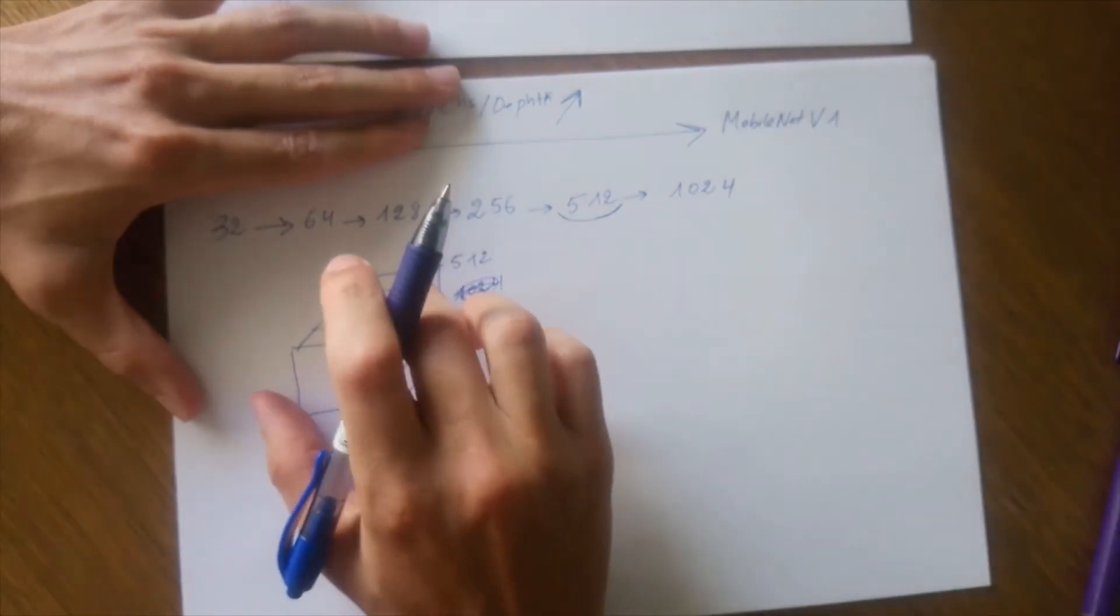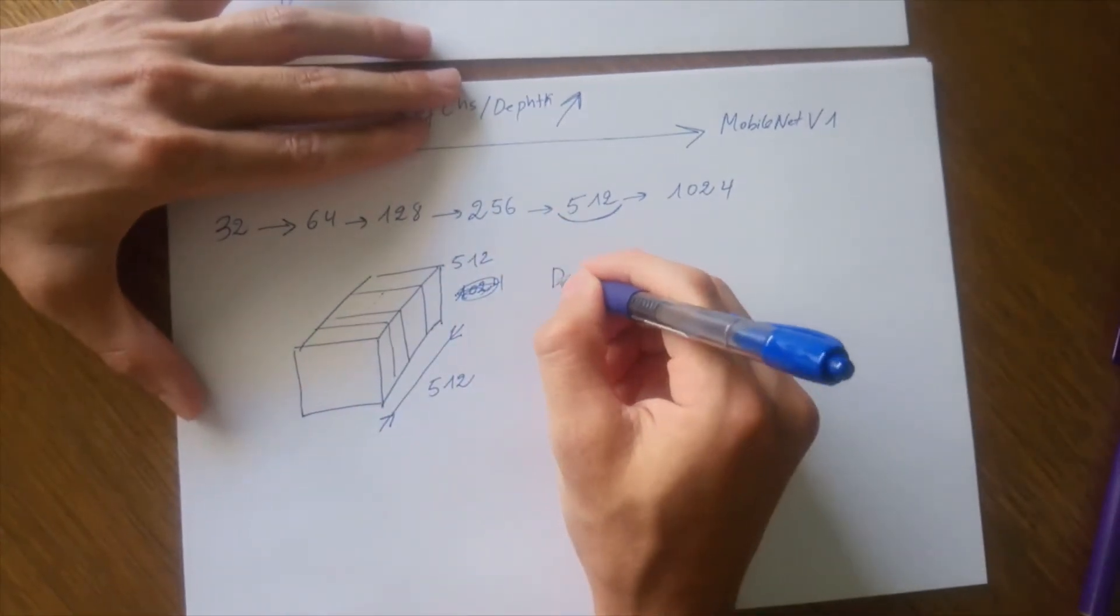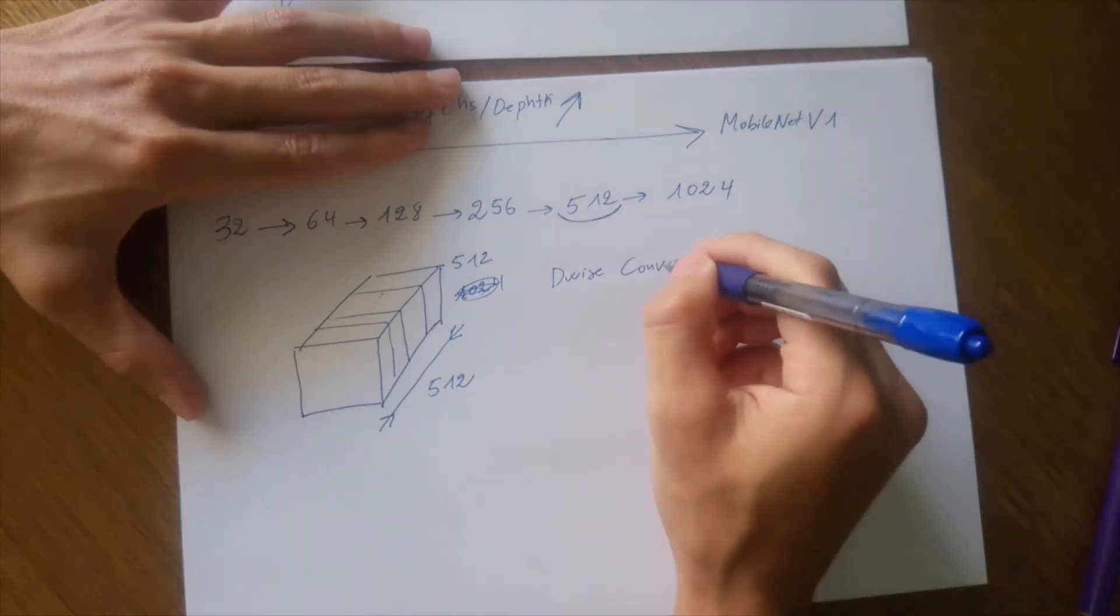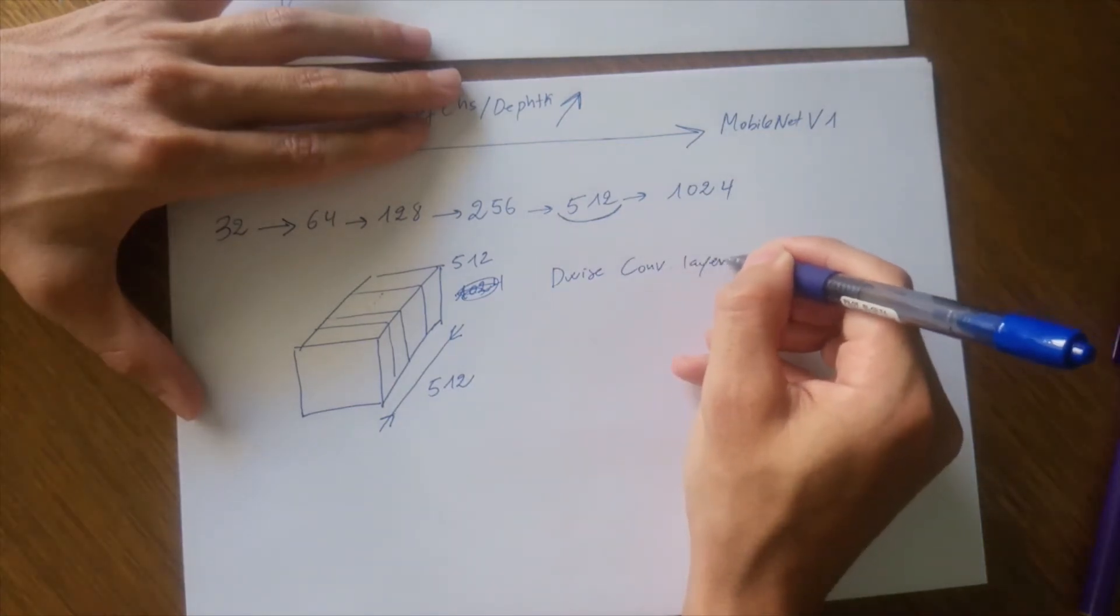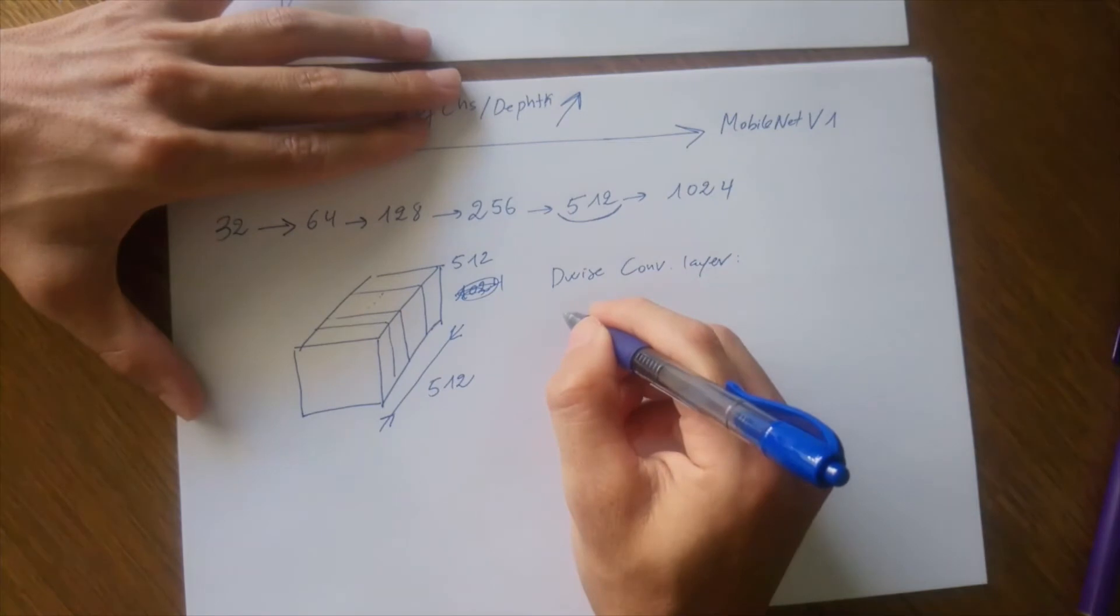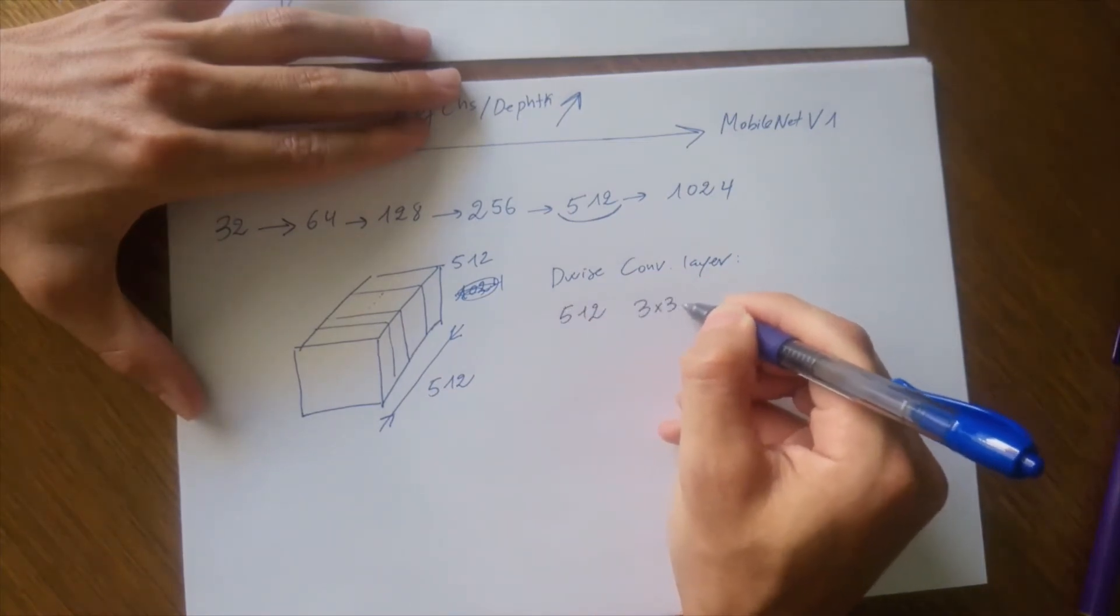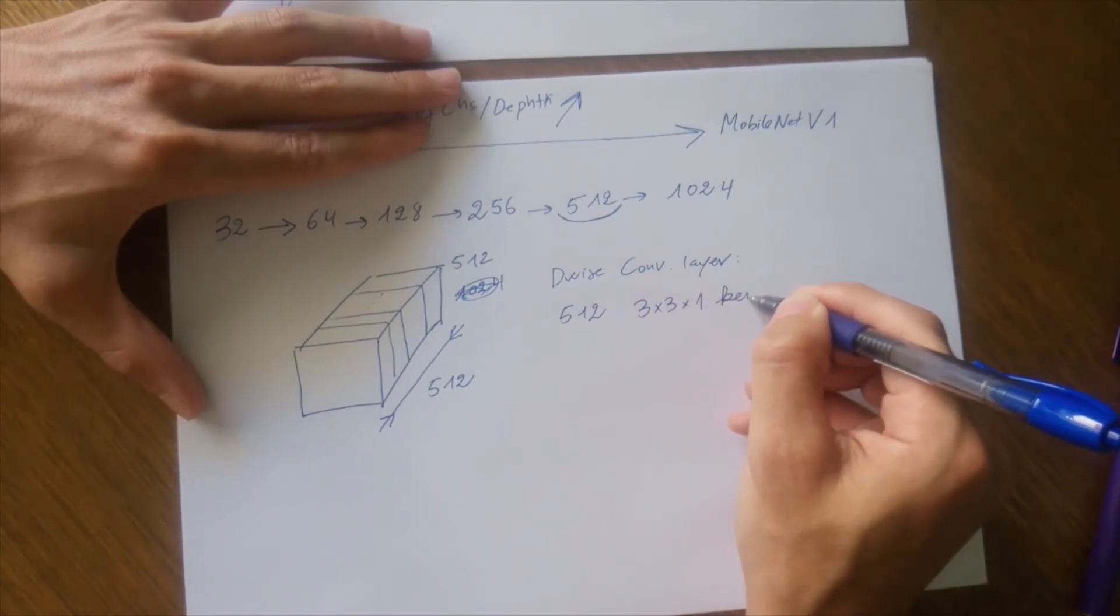So if you want to filter this with depthwise convolutions, depthwise convolutional layer, we would need 512 three by three by one kernels.